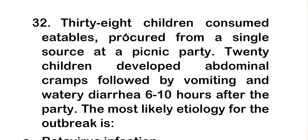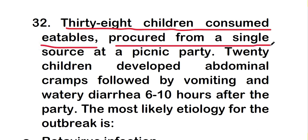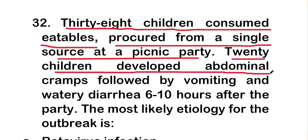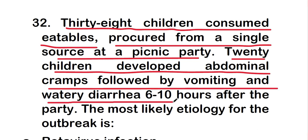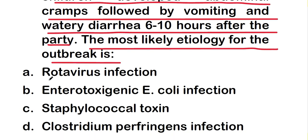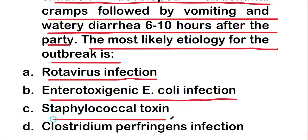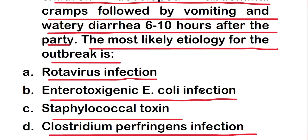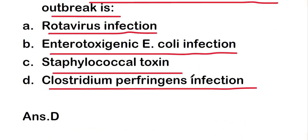Next question: 38 children consumed eatables from a single source at a picnic party. Twenty children developed abdominal cramps followed by vomiting and watery diarrhea six to ten hours after the party. The most likely etiology for the outbreak is rotavirus infection, enterotoxigenic E. coli infection, staphylococcal toxin, or Clostridium perfringens infection. The right answer is option D — Clostridium perfringens infection.